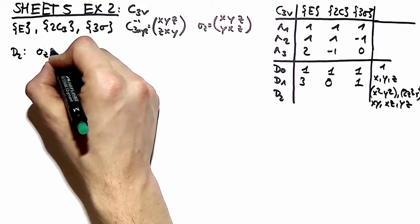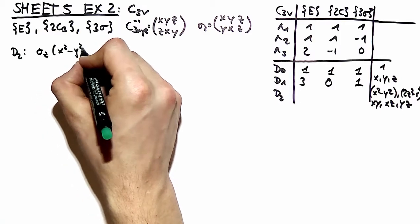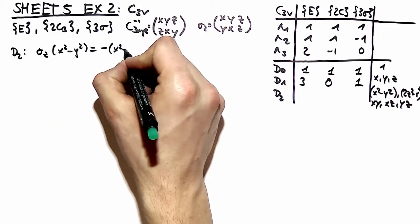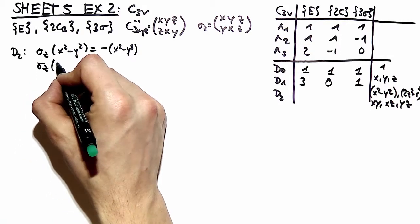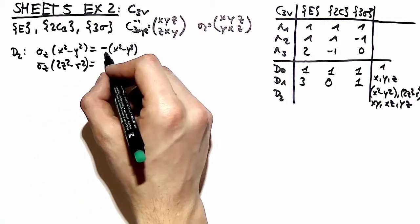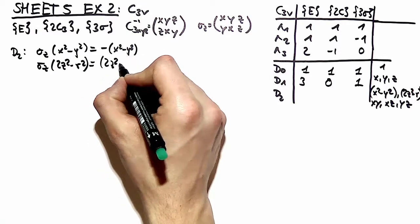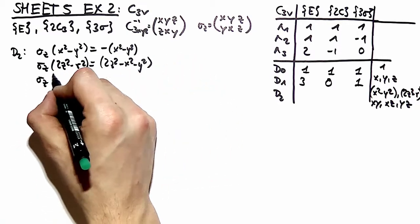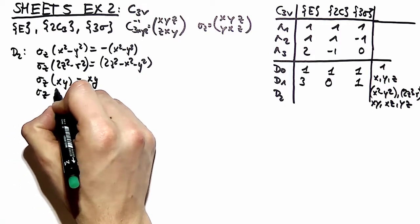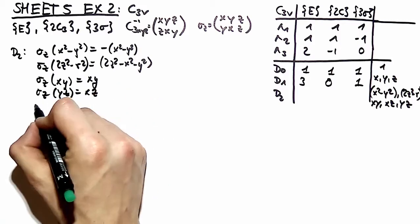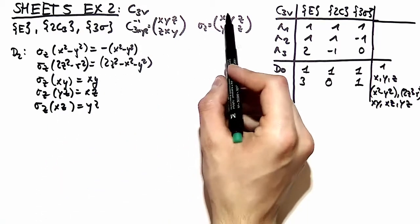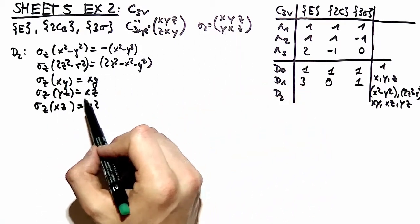For example, we apply sigma z on the basis function x squared minus y squared, and this is minus x squared minus y squared. Sigma z on 2z squared minus r squared, r squared is nothing else than x squared plus y squared, here we see that this remains invariant. Sigma z on xy transforms to xy. Sigma z on yz transforms to xz. Sigma z of xz transforms to yz. So what we do here is we look at how the y transforms to the x and the z transforms to the z.